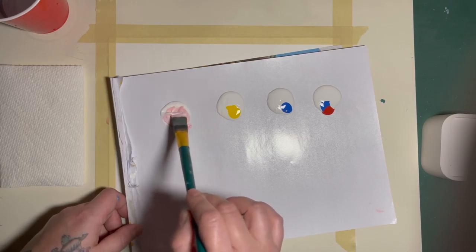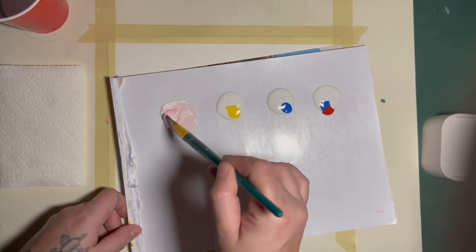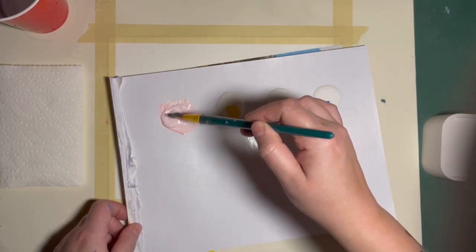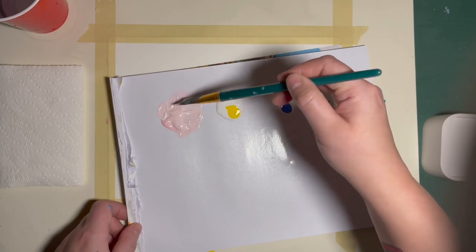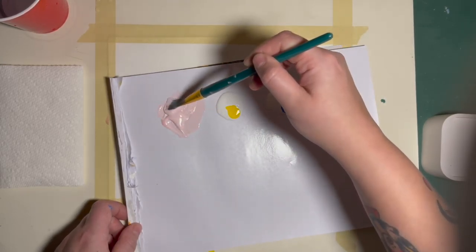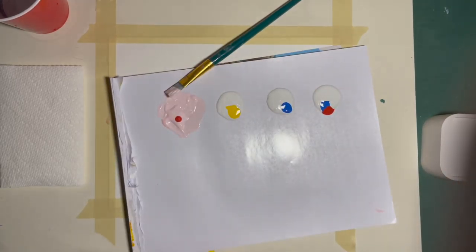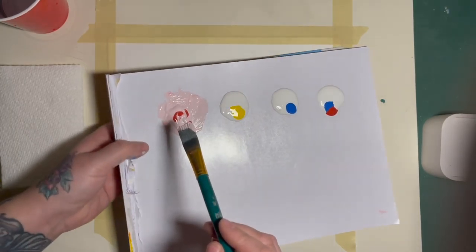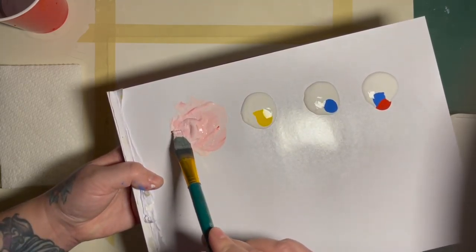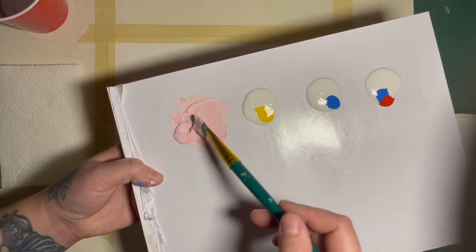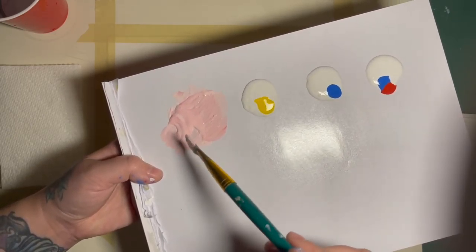So first we're going to mix a nice big blob of white with a little tiny drop of red, and that's going to give us pink. And you're going to mix, mix, mix. And if your pink is not quite as dark as you'd like it, you take your red paint and you add just one little drop, and you mix it in. There, that's looking a little better for my taste, a nice pastel pink.